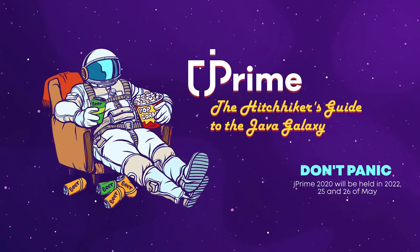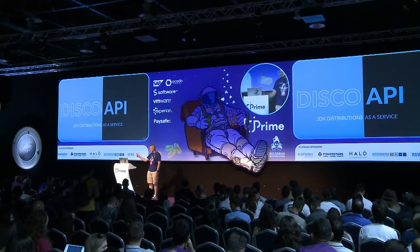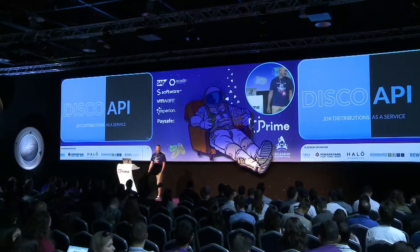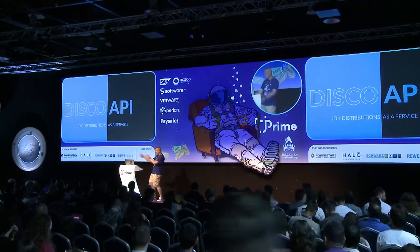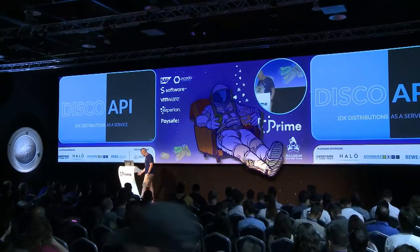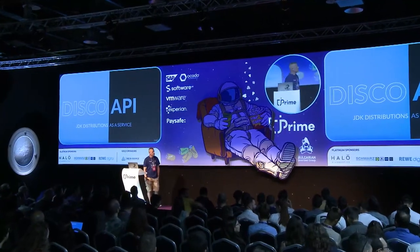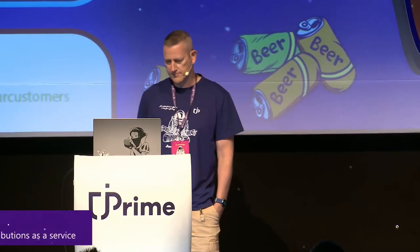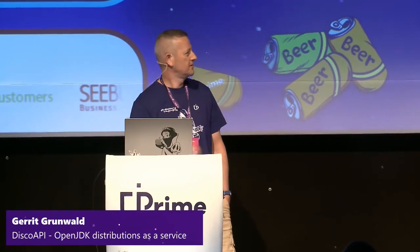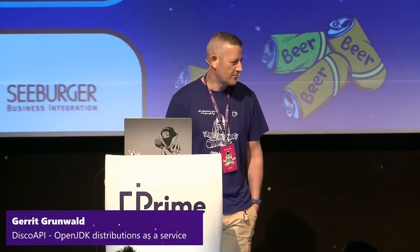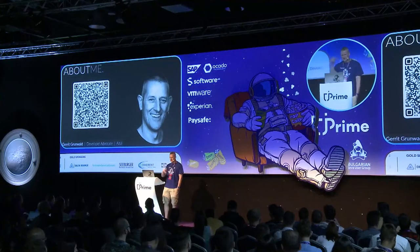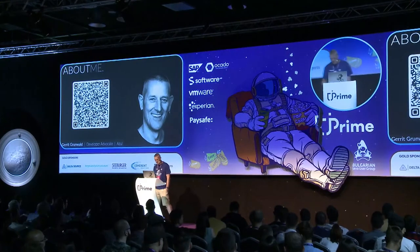Gerrit Grunwald, Fuji.io. Good to be here again. To be honest, I hate this room because it's so wide, so I will try to address all of you. Welcome to the session about Disco API, JDK distributions as a service. First, a few words about myself. My name is Gerrit Grunwald. I'm working for Azul Systems, mainly on Fuji.IO. You should check it out, fuji.io — it's all about Java.